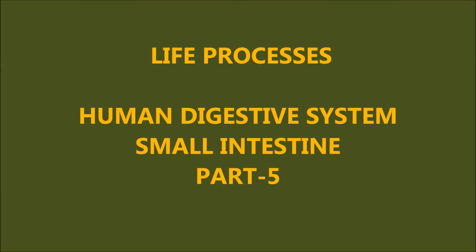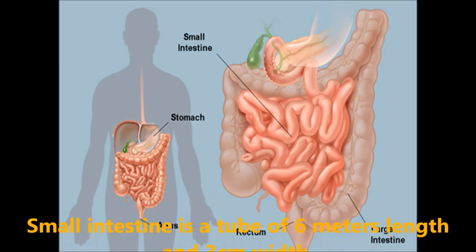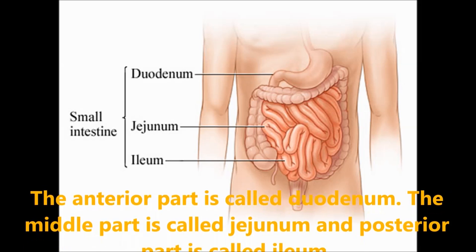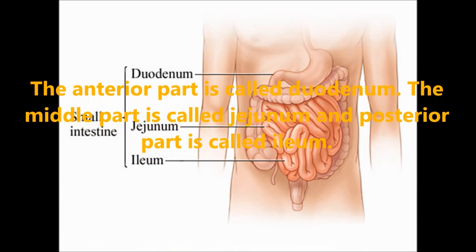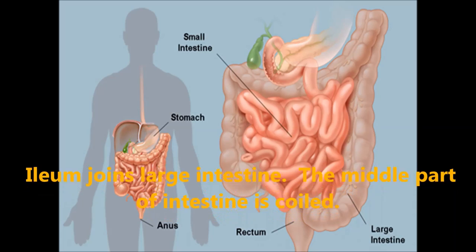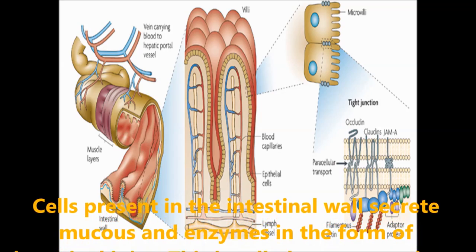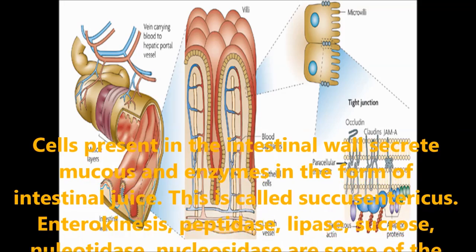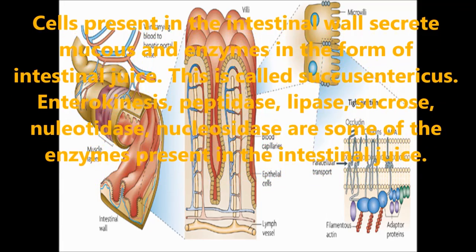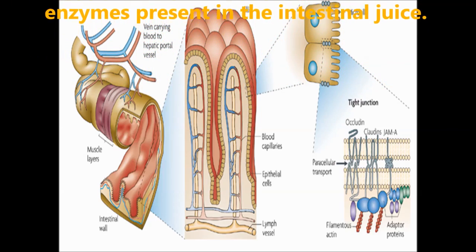The structure and functions of enzymes present in the small intestine. The small intestine is a tube of 6 meters length and 3 centimeters width. The anterior part is called the duodenum, the middle part is called the jejunum, and the posterior part is called the ileum, which joins the large intestine. The cells present in the intestinal walls secrete mucus and enzymes in the form of intestinal juice. Enzymes present in the intestinal juice include enterokinase, peptidase, lipase, sucrase, nucleotidase and nucleosidase.